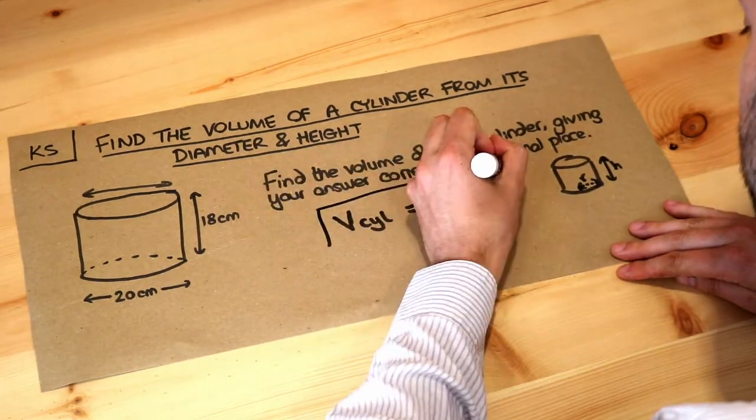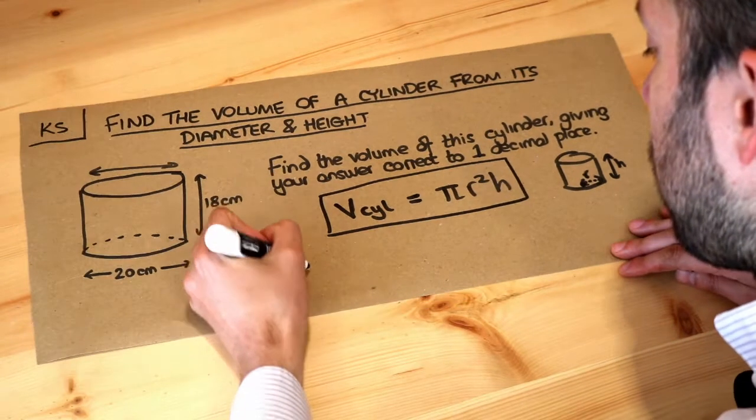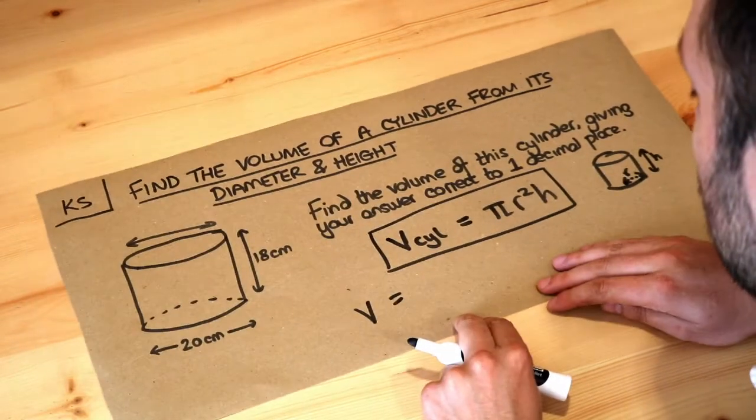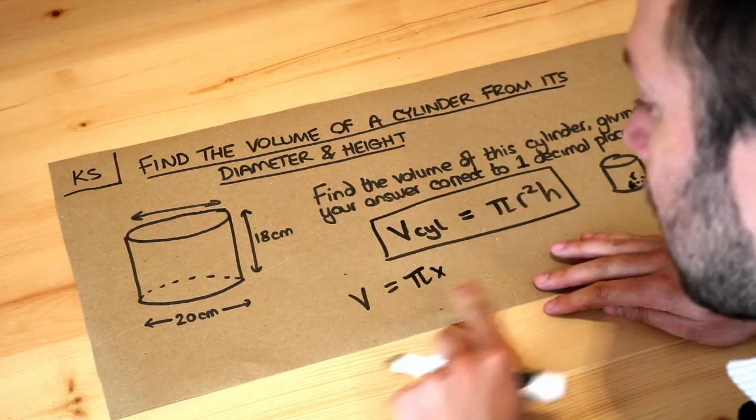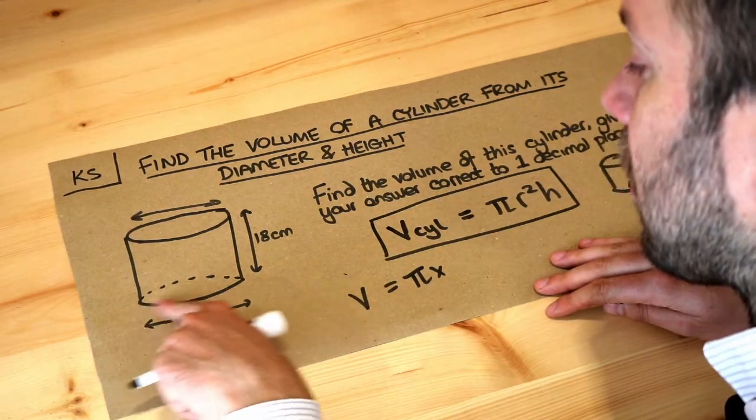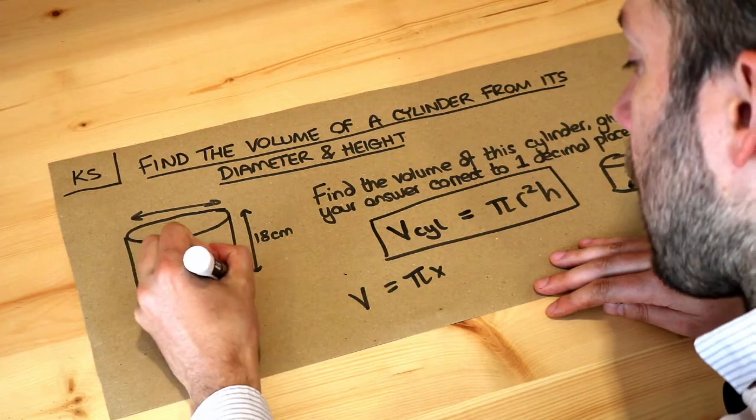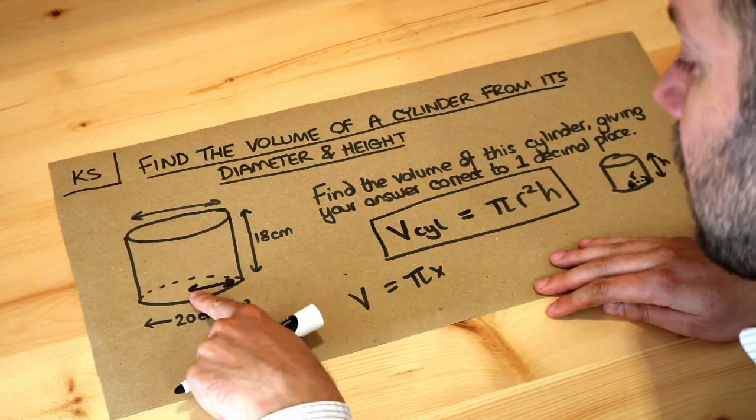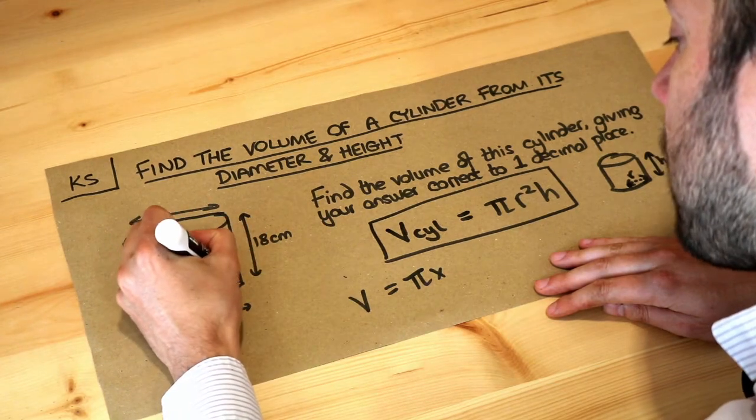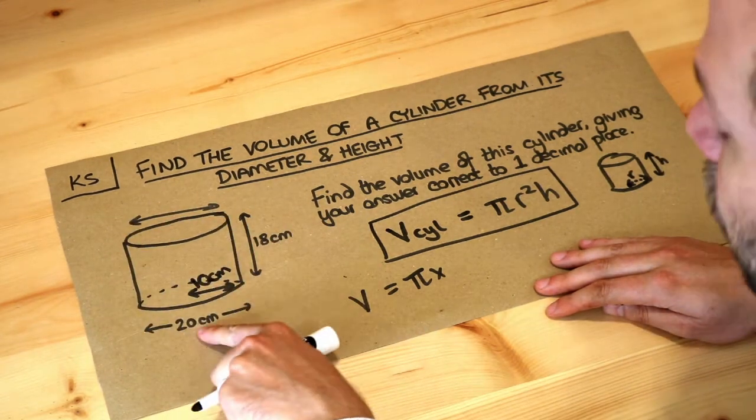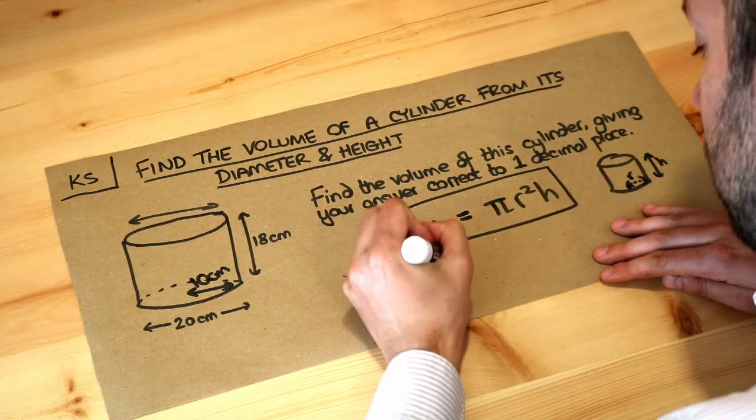That's the formula we need to use. What's the volume of this particular cylinder? We have π multiplied by the radius squared. Now, the diameter—the full way across the circle—is 20, and therefore the radius, the distance from the center of the circle to the circumference, would be 10. Make sure you use the radius of the circle, not the diameter.